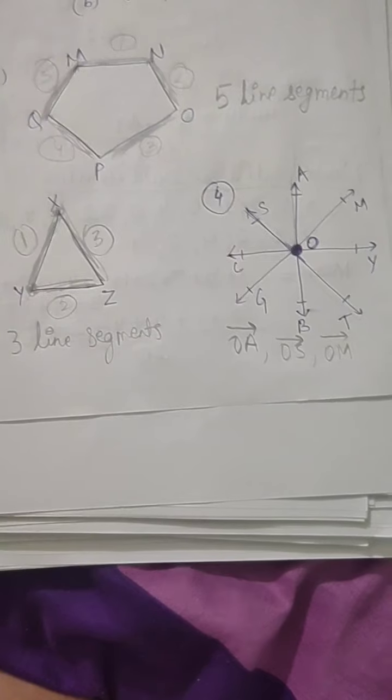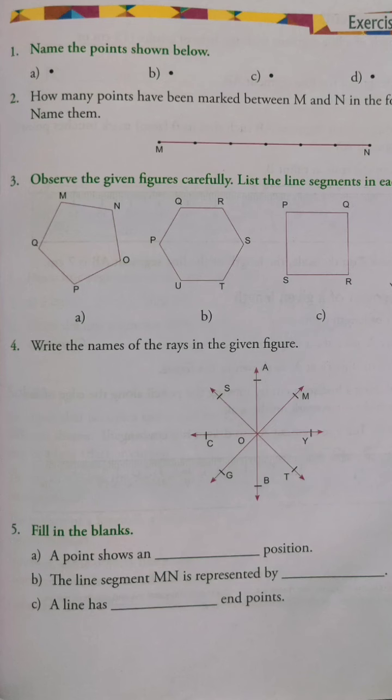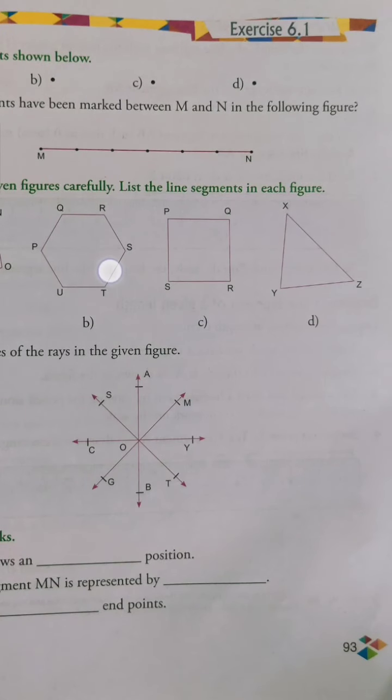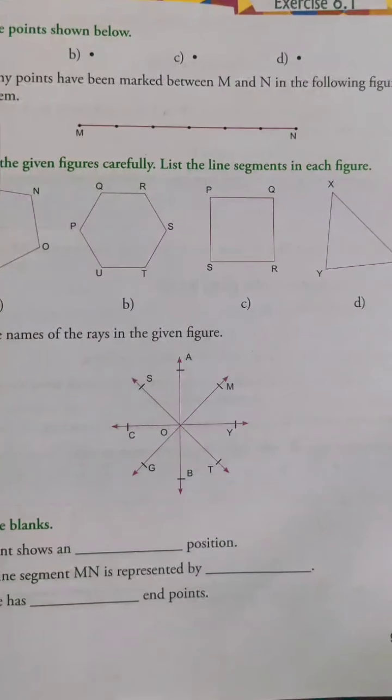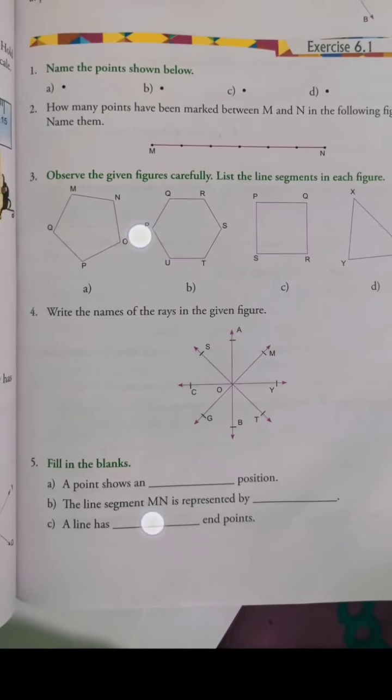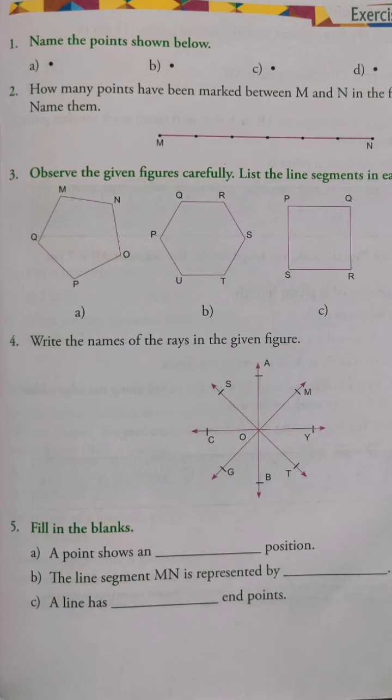So now just do this question. Let's come to the last question of this exercise 6.1, that is page number 93. You have to fill in the blanks. Again, you can do all the questions in the book only because there is enough space for you. You can write the answers.